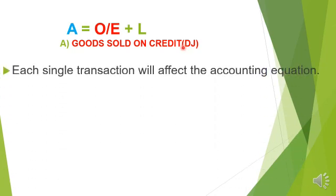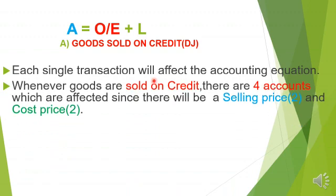Remember, each single transaction affects the accounting equation. When goods are sold on credit, four accounts are affected. This is because we are dealing with two amounts: the selling price affects two accounts according to double entry, and the cost price also affects two accounts — hence four accounts in total.